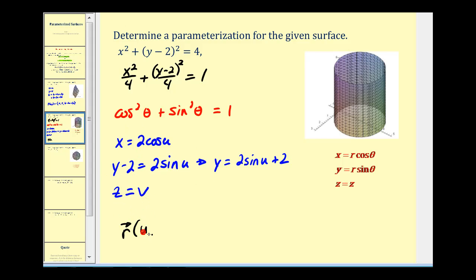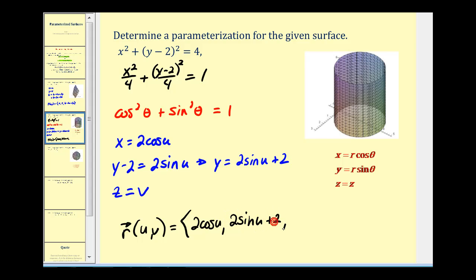The vector valued function for the cylinder would be equal to: 2 cosine u, 2 sine u plus 2, and v.